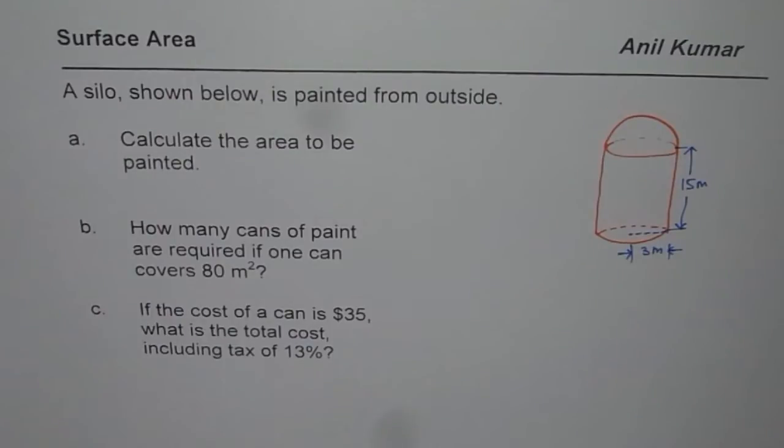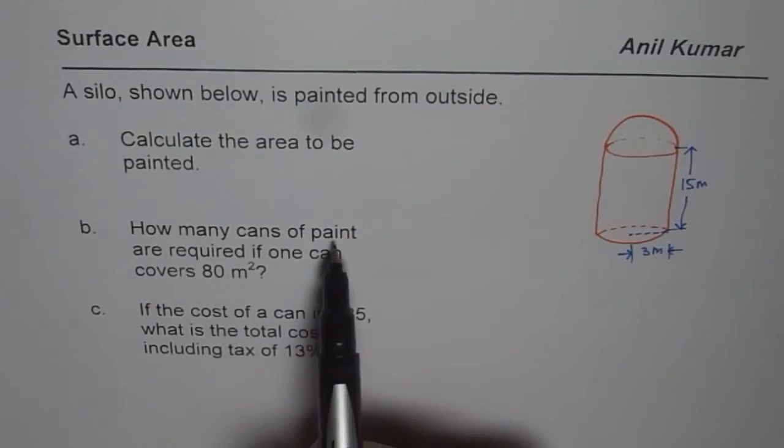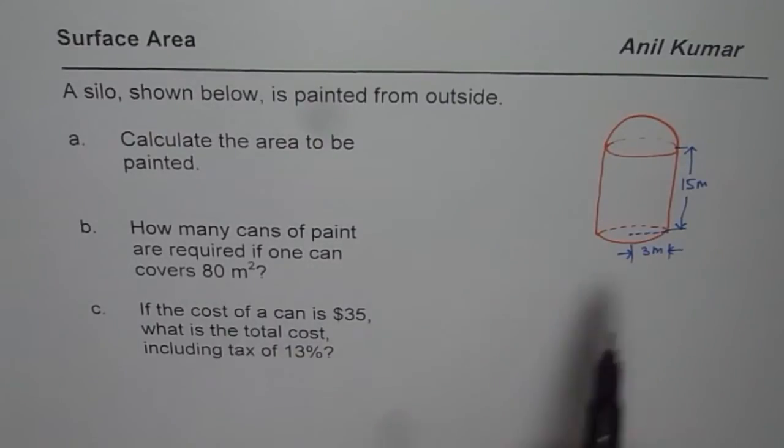Then you'll know what area is to be painted. One can of paint can cover 80 meters square, so how many cans do you need? If the cost of each can is $35, what is the total cost including 13% tax? I hope now the question is clear.